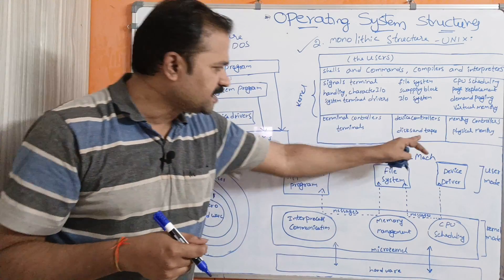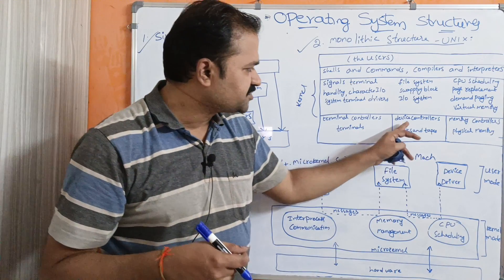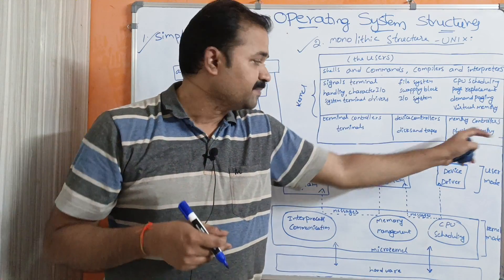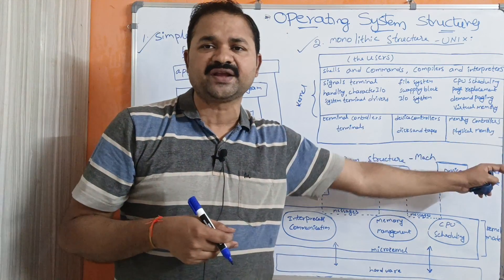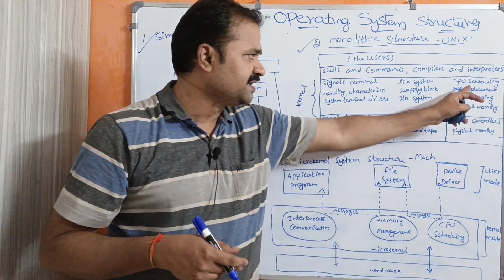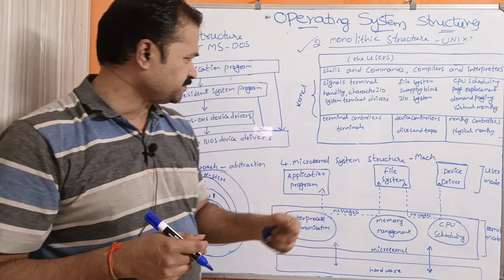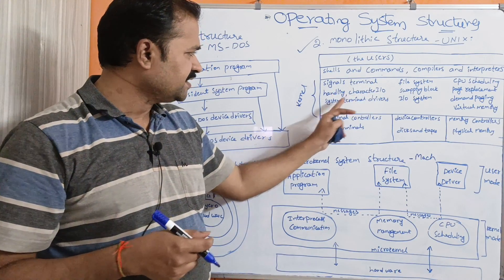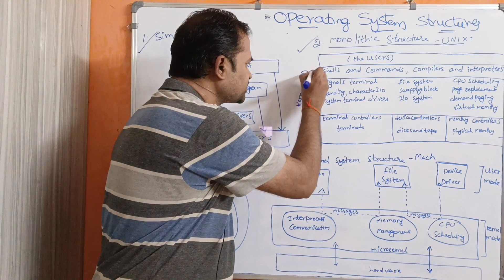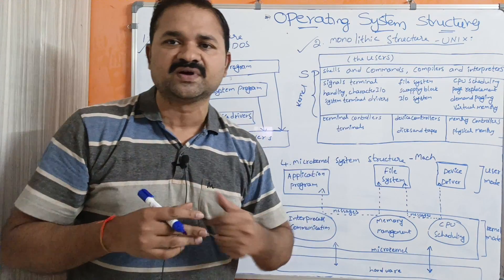At the bottom of the monolithic structure we have hardware devices: terminal controllers, device controllers, disks and tapes, memory controllers, and physical memory. On top of the hardware we have the kernel, which contains functionalities like CPU scheduling, page replacement, demand paging, virtual memory, file system, swapping, block IO system, signals, terminal handling, character IO system, and terminal drivers. On top of this we have system programs like shells, commands, compilers, and interpreters. On top of those are the users.